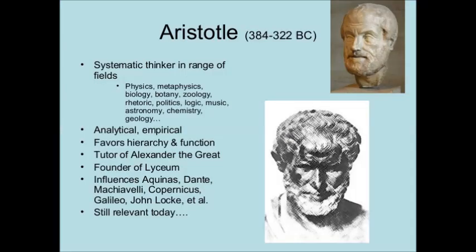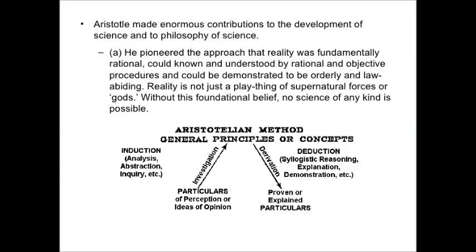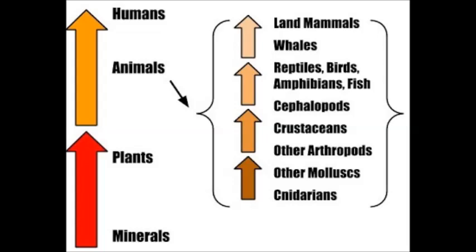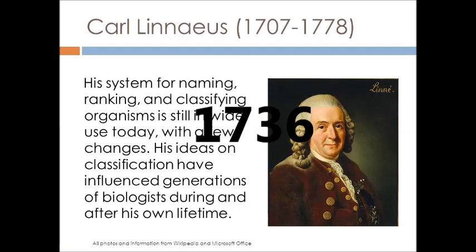Aristotle came later and is another philosopher. He is well known for his work in science because of his genius. He lived from 384 to 322 BC and developed the field of biology. In 1736, Swedish scientist Carl Linnaeus used the term 'biology' for the very first time.